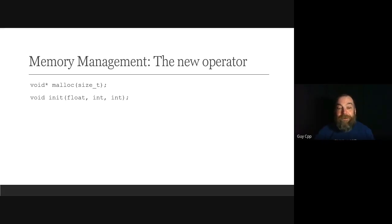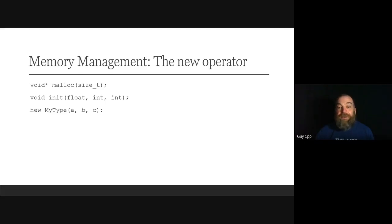The new keyword is the key here — it combines malloc and init in a single expression, allocating memory and constructing the object in place in a single indivisible invocation. You may have heard coding guidelines like 'no raw loops' or 'no raw new' — both are excellent guidelines. I'm telling you about the new operator so you understand what's going on under the hood, and I will show you how to completely avoid using new later.